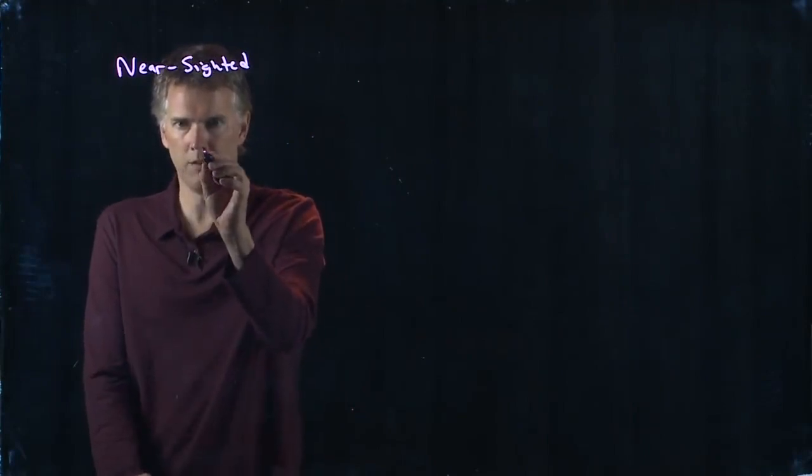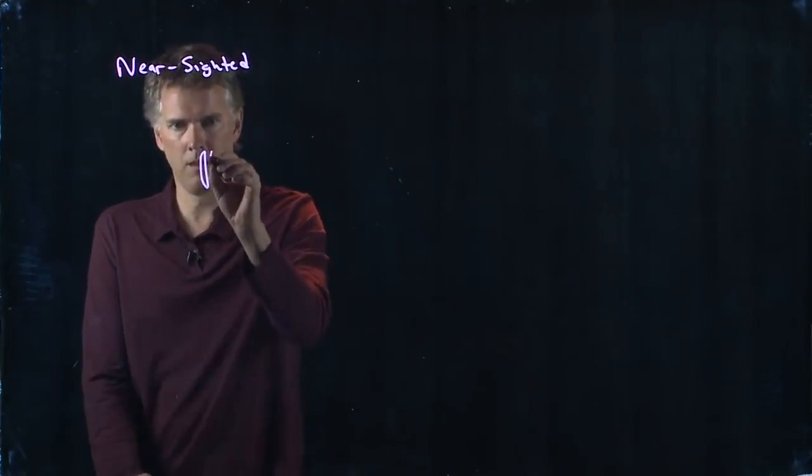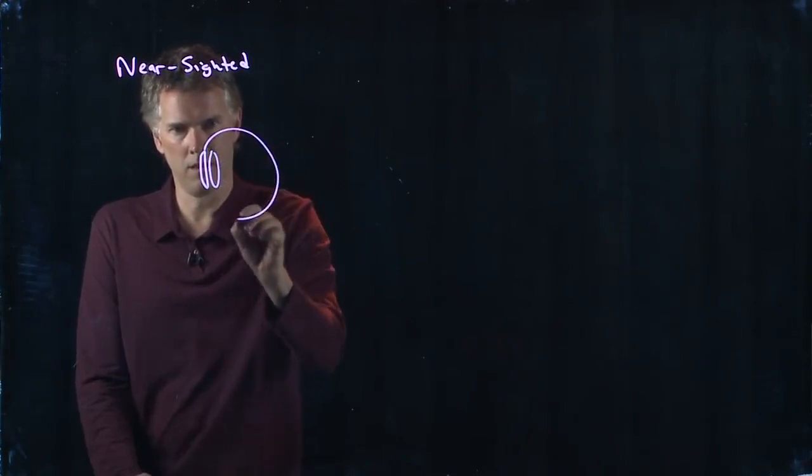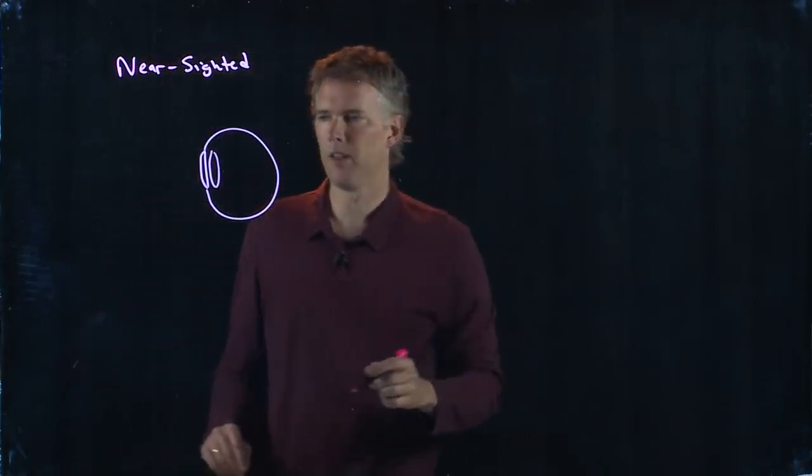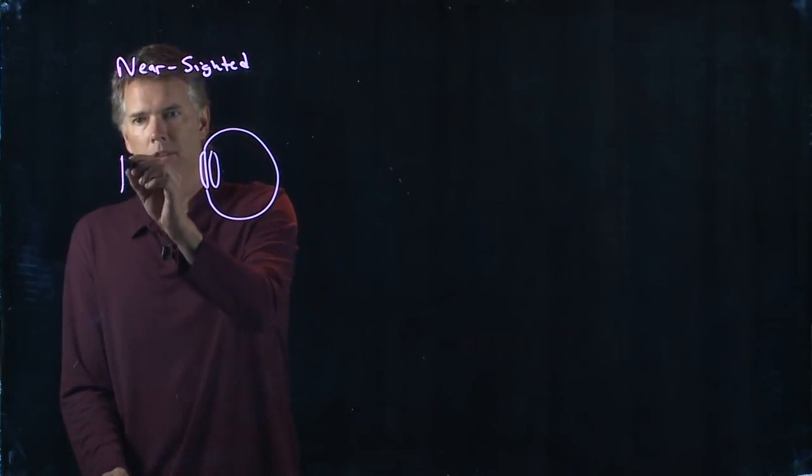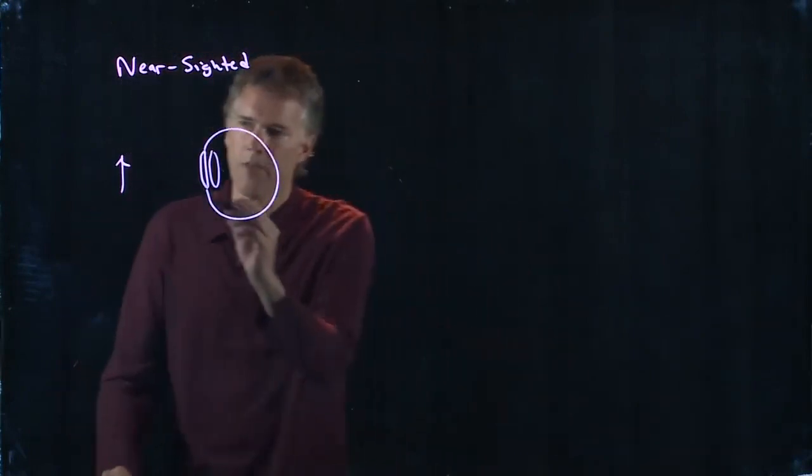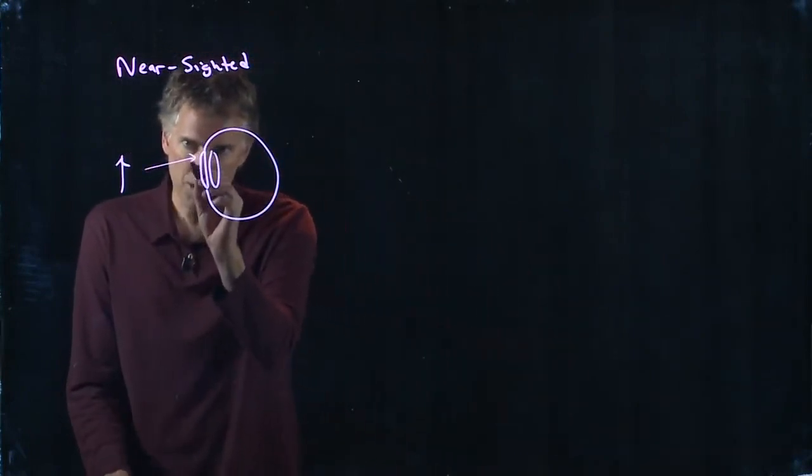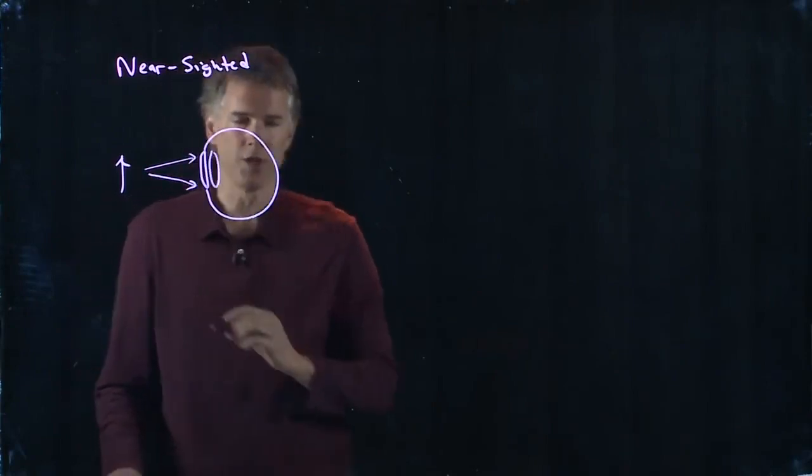If you are nearsighted, then you can see things that are near. Which means, if this is my eyeball, I can see things that are near. And if this object is near, then the rays coming from the object are diverging.